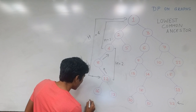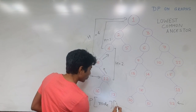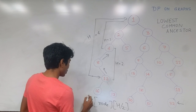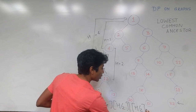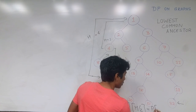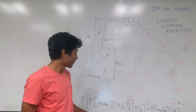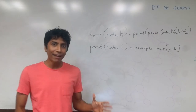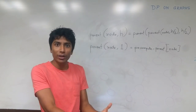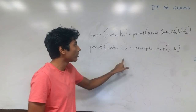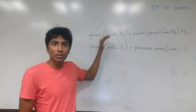The parent of the node at height H is found by taking the parent at height H/2 and then finding its parent at height H/2. This is the recurrence relation. To get to the parent at height H, you go to the parent at height H/2 and find its H/2 parent. The base condition is that if the height is just 1, you can trivially find it by pre-computing the direct parent of that node. These are the two recurrence relations: the base condition and the relation itself.